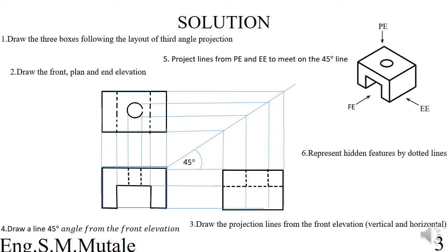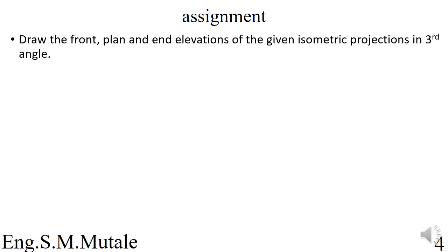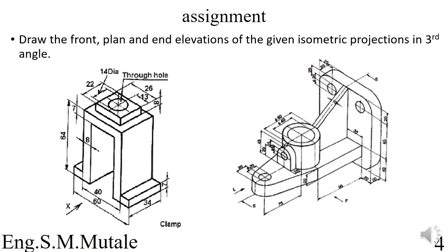We have an assignment: draw the front, plan, and end elevations of the given isometric projections in third angle projection. There are two questions. As mentioned, a question will have dimensions provided. For the first question, all those dimensions are given, so when drawing the boxes make sure you follow the dimensions which have been given.